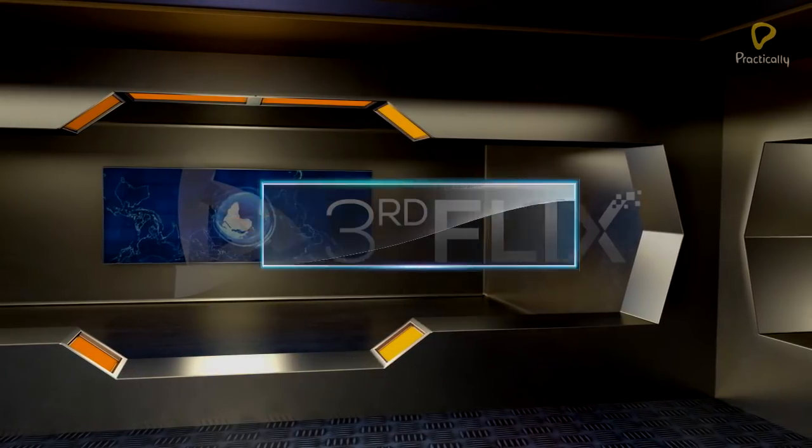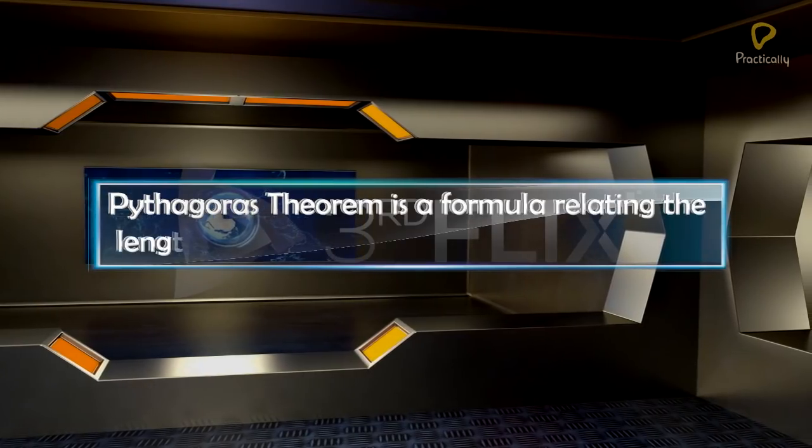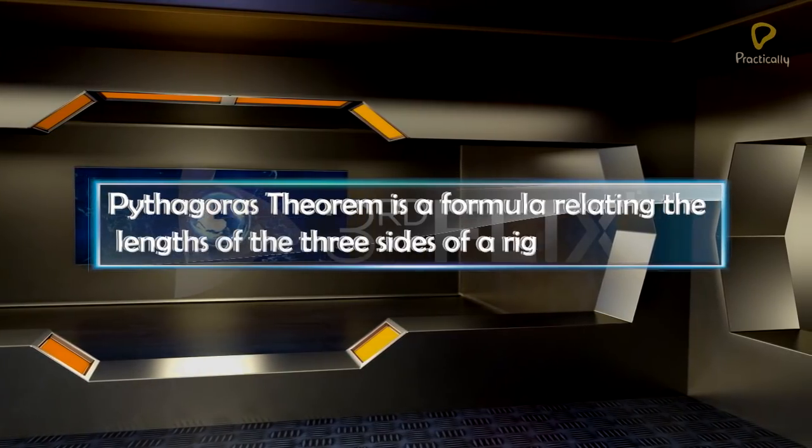The Pythagorean theorem, or Pythagoras theorem, is a formula relating the lengths of the three sides of a right triangle.